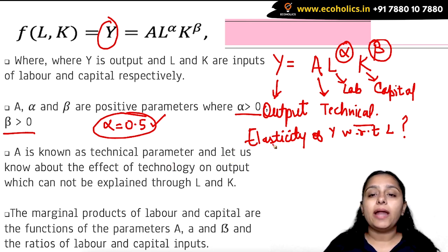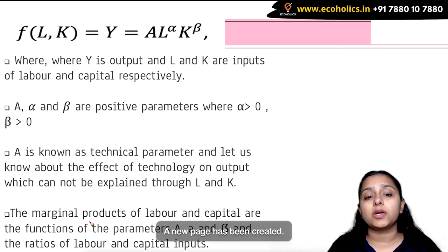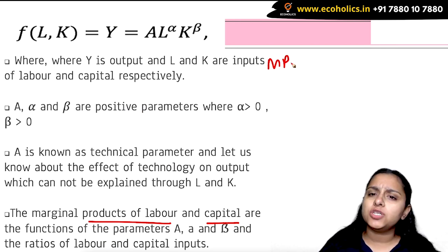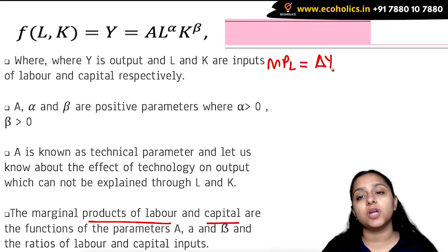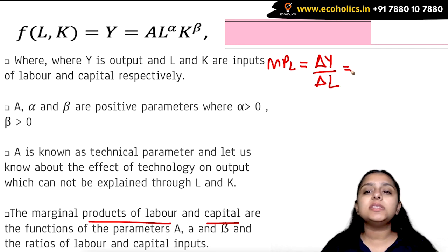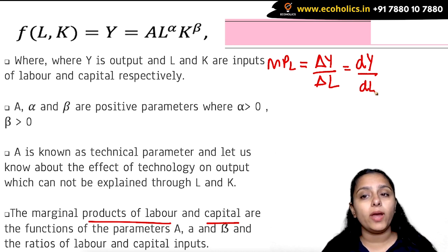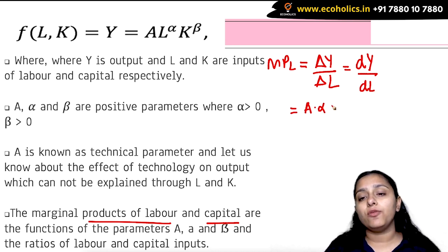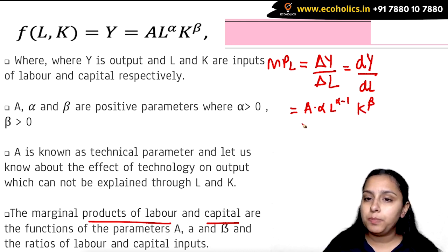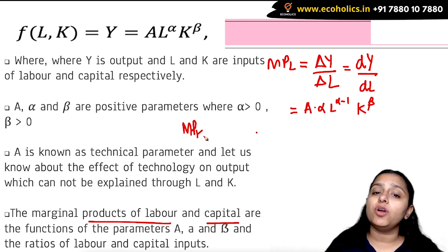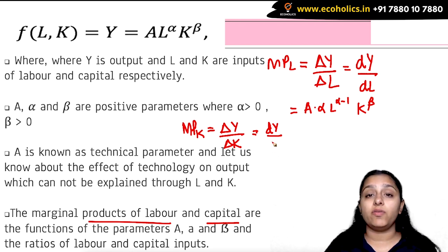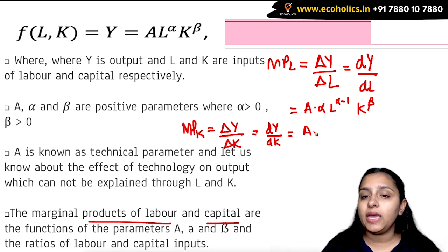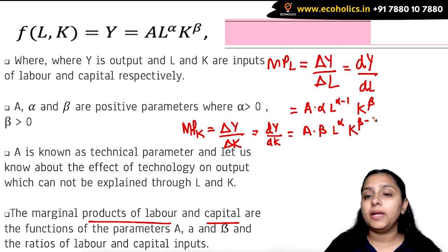The marginal productivity of labor means the change in output when you change labor by one additional unit, given by the derivative of Y with respect to L: MPL = A · α · L^(α−1) · K^β. Similarly, the marginal productivity of capital is the change in output due to a change in capital, which is the derivative of Y with respect to K: MPK = A · β · L^α · K^(β−1).